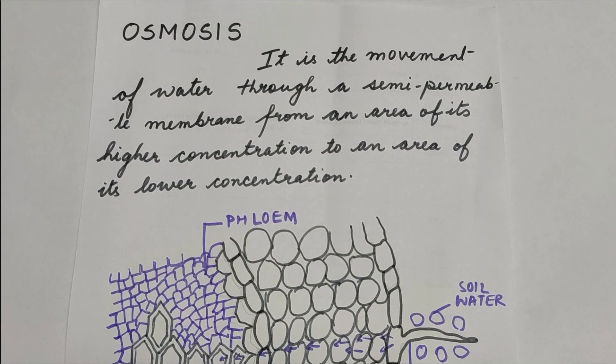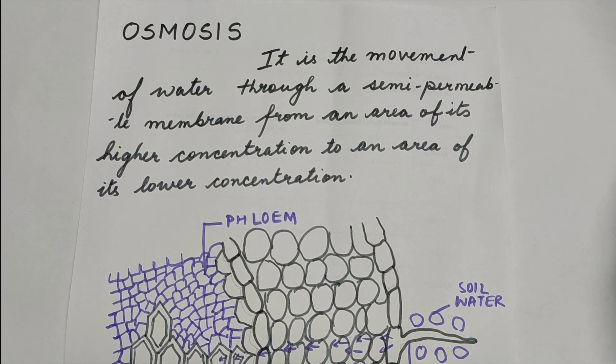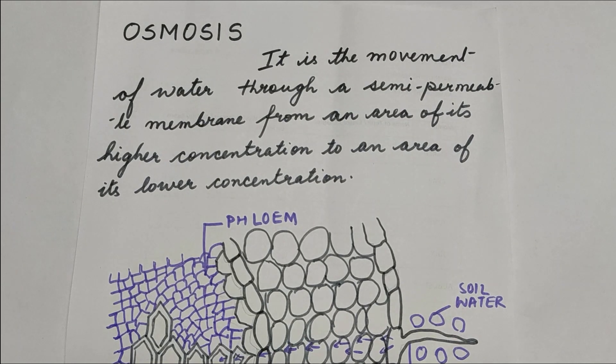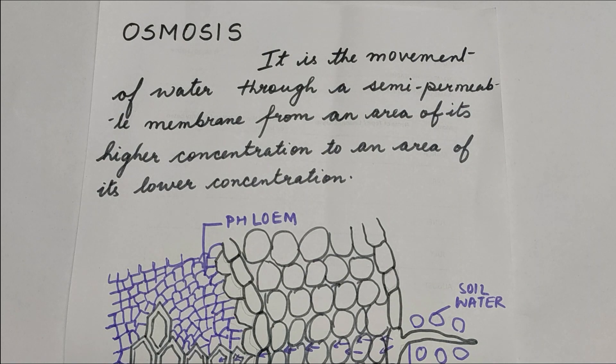Now we will start with osmosis. As you can see the definition of osmosis: it is movement of water molecules through a semi-permeable membrane from an area of its higher concentration to an area of its lower concentration.